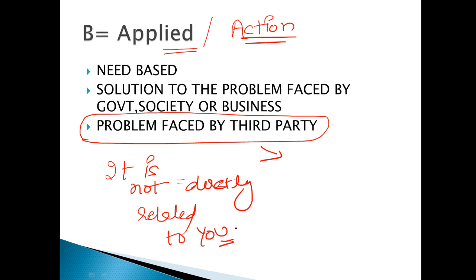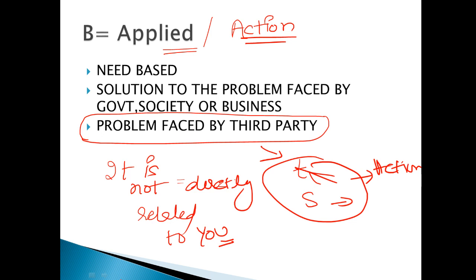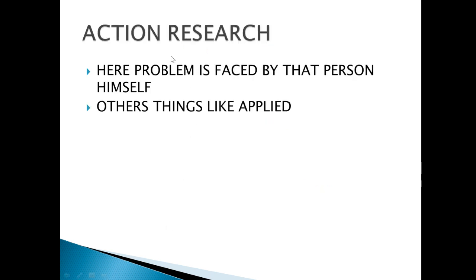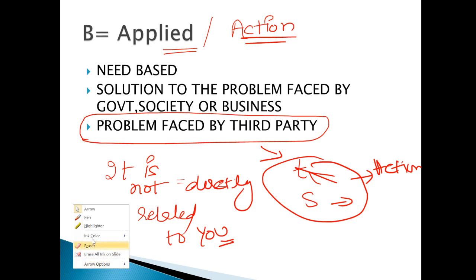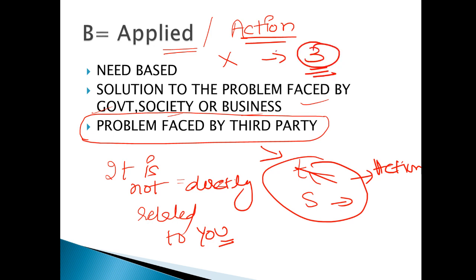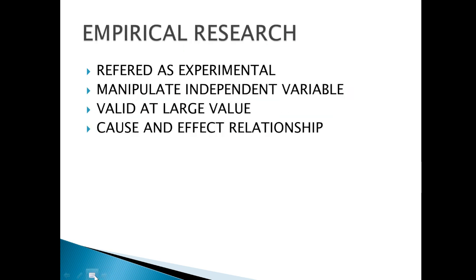When you feel that you are directly related to the problem — for example, a teacher and a student. If a student has a problem and the teacher is solving it, that is called action research. When the problem is faced by the person himself, that is action research. In applied research, we find solutions to problems faced by government, society, or business — problems that a third person is facing. In action research, you yourself are facing the problem.